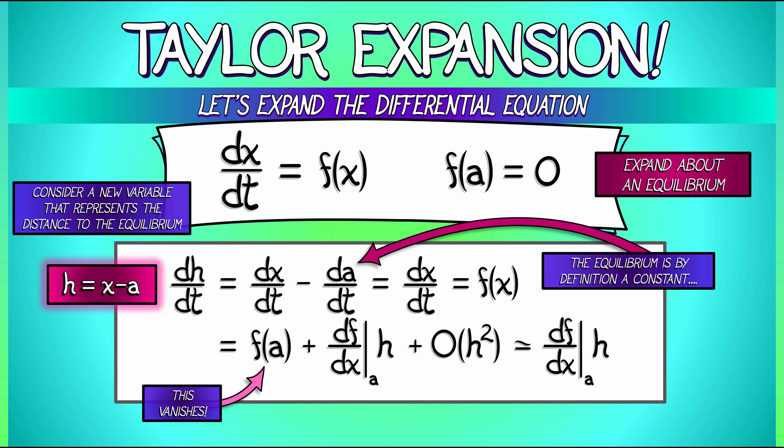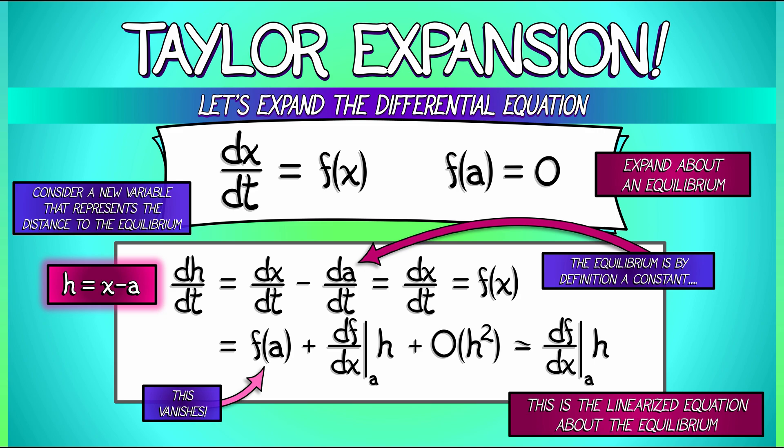If we linearize that differential equation about x equals a, about the equilibrium, we get dh/dt equals this derivative, this constant evaluated at a times h. Now that's a linear equation.